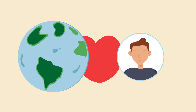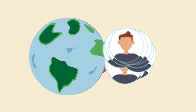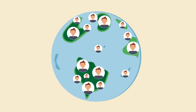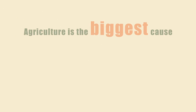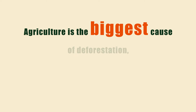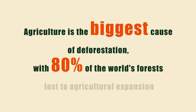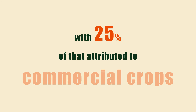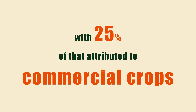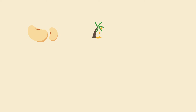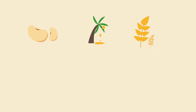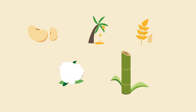The expansion of human settlement in the 20th and 21st centuries has caused further devastation to many forests all over the world. Agriculture is the biggest cause of deforestation, with 80% of the world's forests lost to agricultural expansion, with 25% of that attributed to commercial crops such as soybeans, palm oil, rice, cotton, and sugarcane.